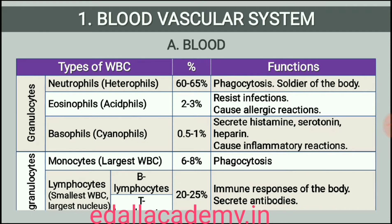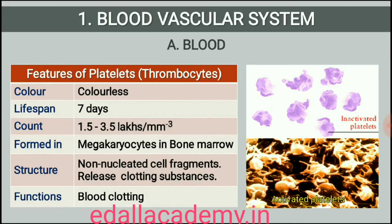Lymphocytes, 20-25%, are of two major types: B and T forms. Both B and T lymphocytes are responsible for immune responses of the body. Platelets, also called thrombocytes, are cell fragments produced from megakaryocytes, special cells in the bone marrow. Blood normally contains 1,500,00 to 3,500,00 platelets per cubic millimeter. Platelets can release a variety of substances most of which are involved in the coagulation or clotting of blood. A reduction in their number can lead to clotting disorders which will lead to excessive loss of blood from the body.